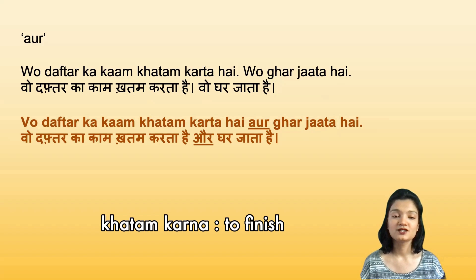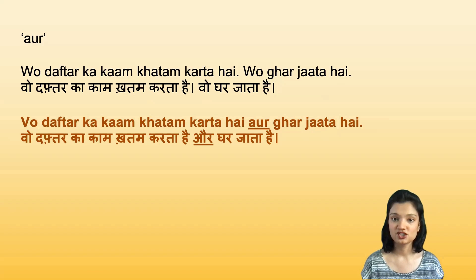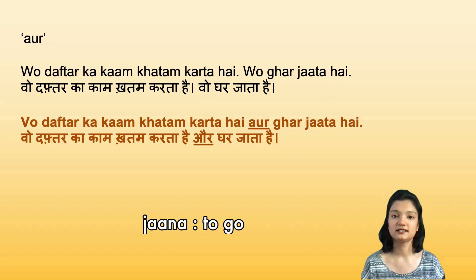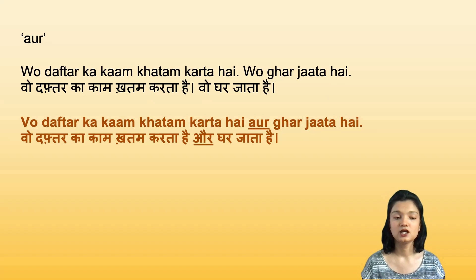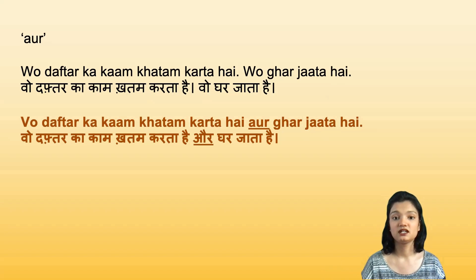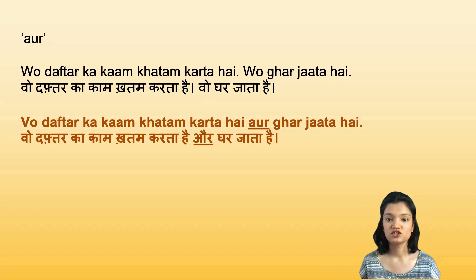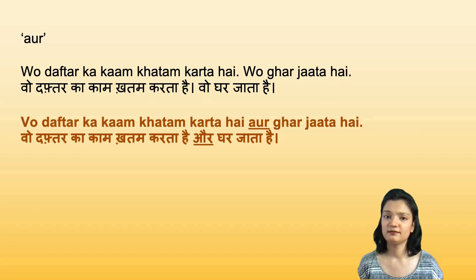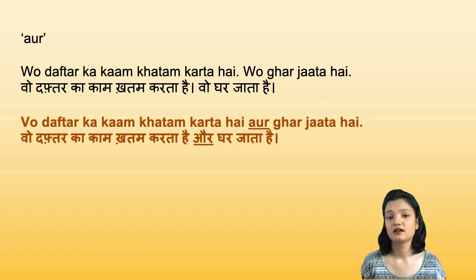The verb here is khatam karna, meaning to finish — so khatam karta hai means he finishes his office work. Wo ghar jata hai means he goes home, because 'wo' agrees with 'jata' or 'karta'. Combining these two sentences using 'aur': 'Wo daftar ka kaam khatam karta hai aur ghar jata hai.' Just like in English, you don't repeat the subject when it's the same person doing both actions.